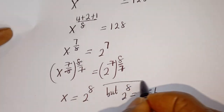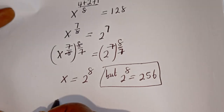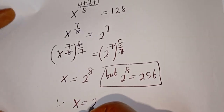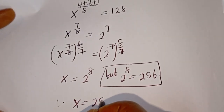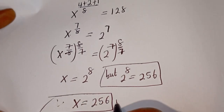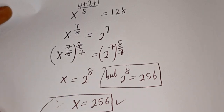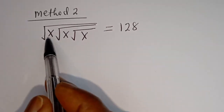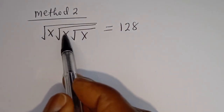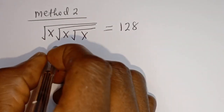Since 2 to the power of 8 equals 256, therefore s is equal to 256, and this is the final answer. Now let's consider the second method, called Method 2. We have the same given equation: square root of s, square root of s, and square root of s is equal to 128.